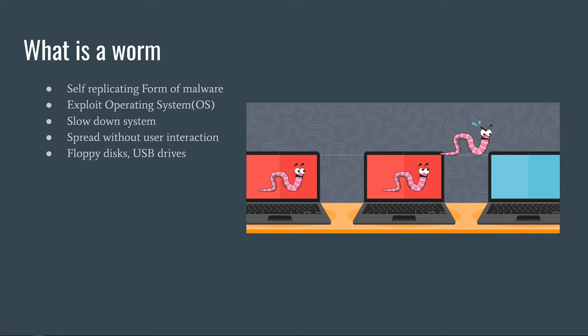A worm is a self-replicating form of malware whose main goal is to infect other computers while remaining active on infected systems. Worms mainly exploit the background and invisible portions of operating systems, and therefore are not noticed until they are already consuming valuable system resources, causing the computer to slow down and completely halt some tasks.